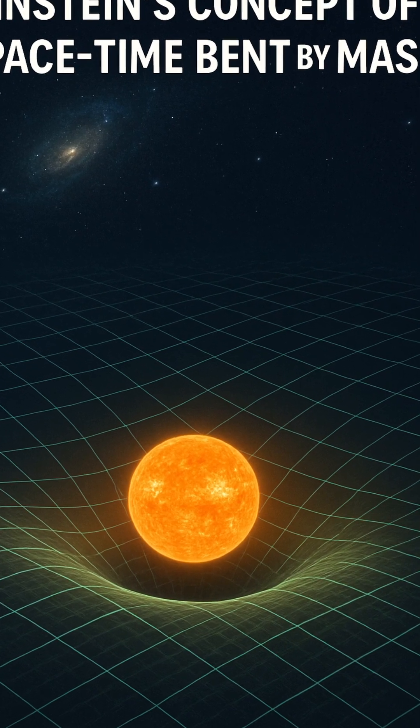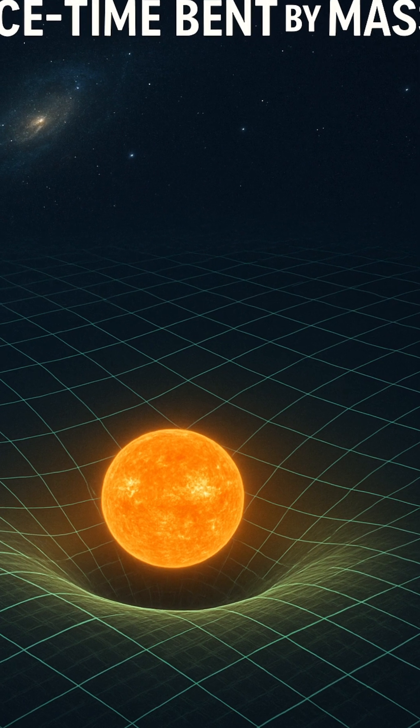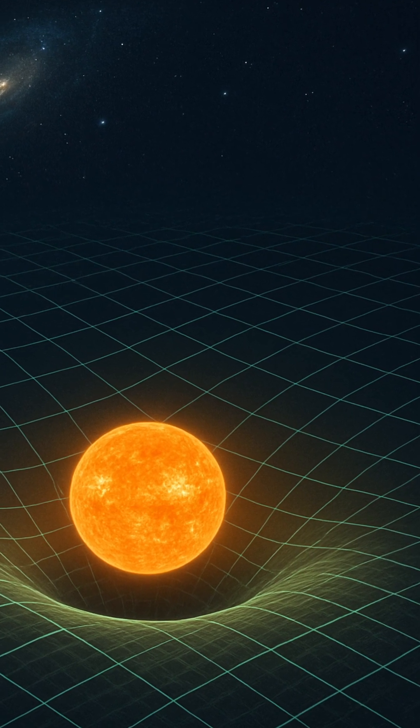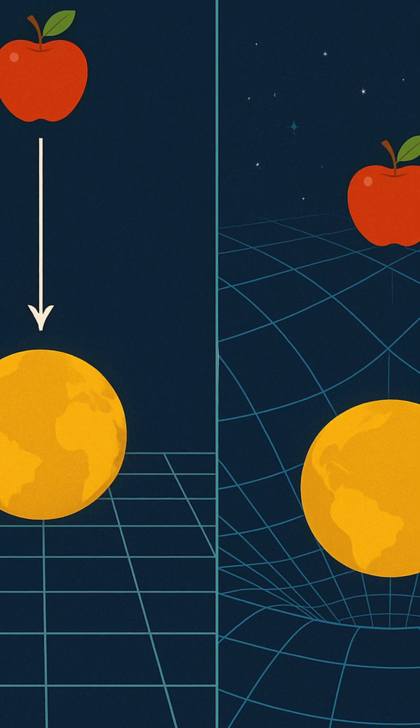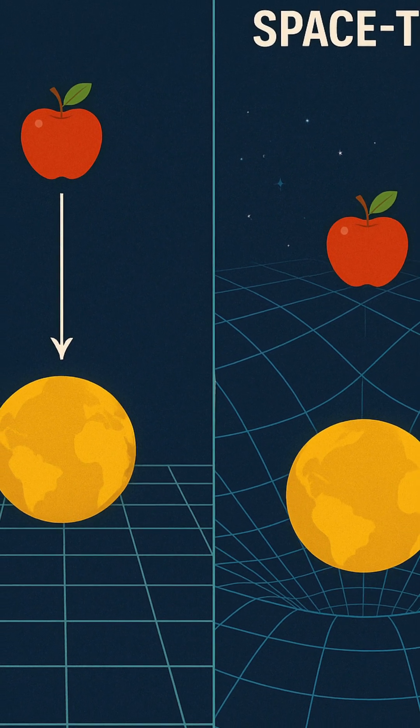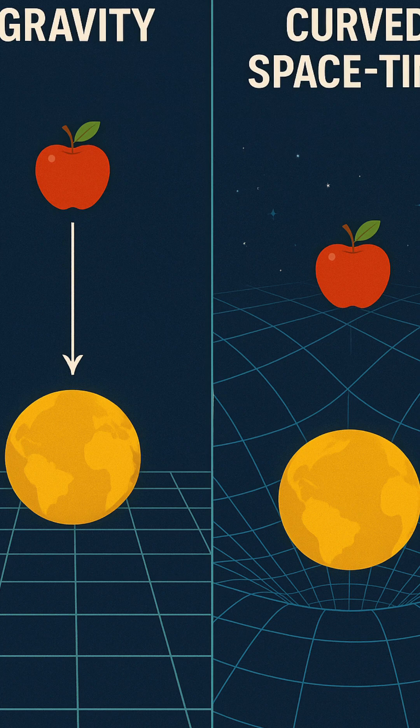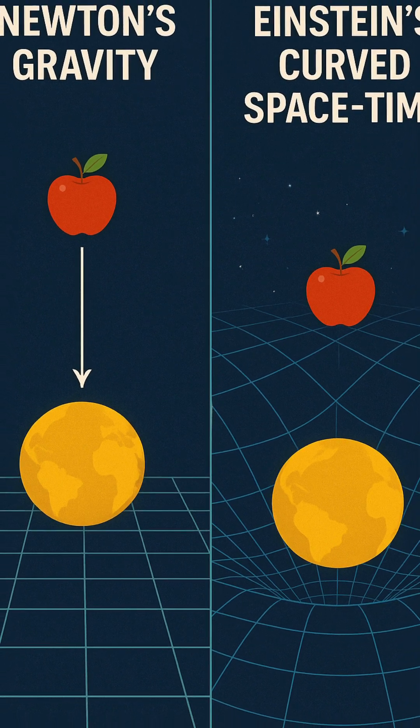Imagine space-time as a vast, invisible sheet stretched out across the cosmos. When a massive object like a star or planet rests on that sheet, it causes a dip, a curve. Smaller objects near it don't get pulled in the traditional sense. They follow the curved paths laid out by the distortion in the fabric.